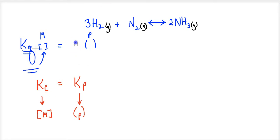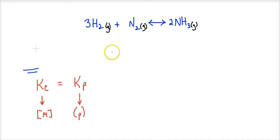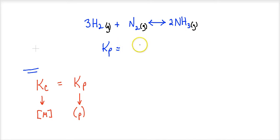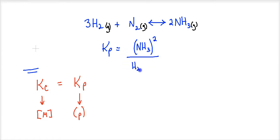Let's start with what this represents. This is a KP expression for a gas-phase reaction — the Haber process, a very famous reaction. KP is the equilibrium constant in a reaction full of gases, and it equals products over reactants. We have ammonia, NH3 gas, in parentheses showing partial pressure; coefficients become exponents — products over reactants — and the reactants go into the denominator to their respective powers.